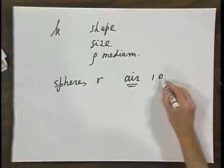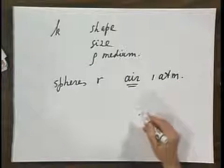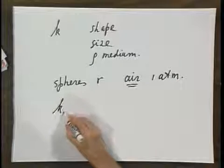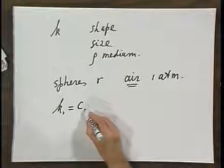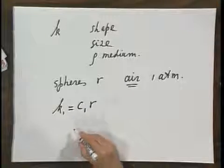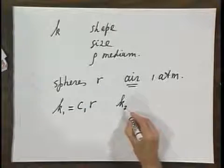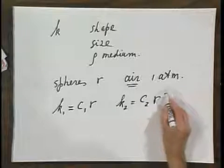And I do that at one atmosphere. K1 is then given by C1 times R and K2 is then C2 times R squared.